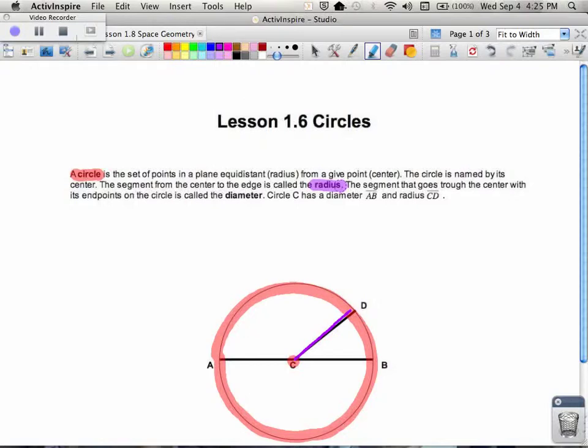Also in this figure, we have something called the diameter, and the diameter is a segment that goes through the center of the circle and connects two points on the edge of the circle. So for example here, our diameter would be called AB, whereas our radius would be called CD.